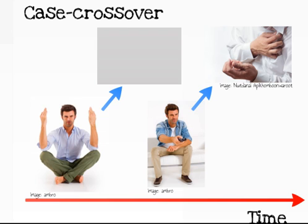In the spirit of choosing controls that are as similar to cases as possible, then who better but the cases themselves? This is the principle of a case crossover study. Our example patient exposed themselves to yoga, and a day later nothing happened. A week later they exposed themselves to TV, and the next day they had a heart attack. If this pattern were repeated in many subjects, it would indicate that sedentary behaviours lead to heart attacks.